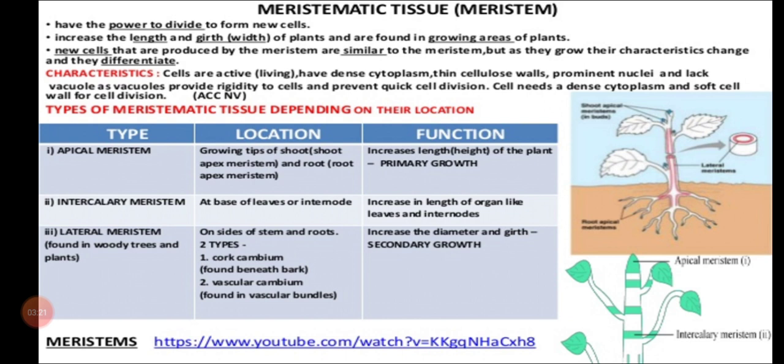The second point: because of the meristematic tissue only, there is an increase in length and girth — length means height-wise, girth means side-wise or width. So increase in length and increase in width happen because of the meristematic tissues only. If you look at any plant after one year, you can see increase in length and also in width, because the plant has undergone cell division and possesses meristematic tissues.